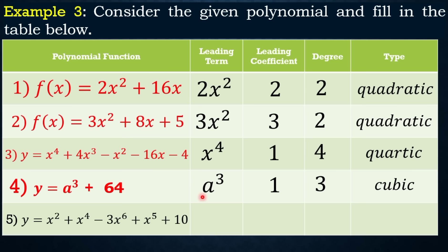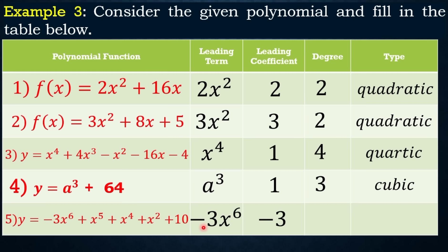For example 5, y = x² + x⁴ − 3x⁶ + x⁵ + 10. Arrange in standard form: y = −3x⁶ + x⁵ + x⁴ + x² + 10. The leading coefficient is −3 and the degree is 6. When the degree is 5, we call it quintic; when it is 6 or higher, we say it is a degree-6 polynomial.